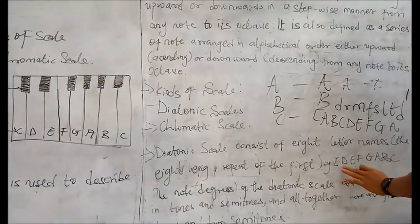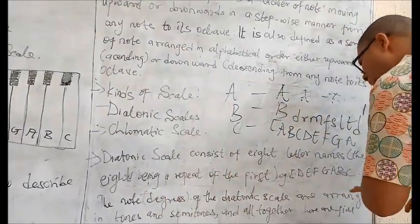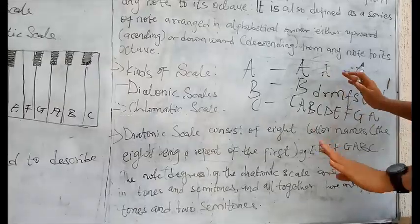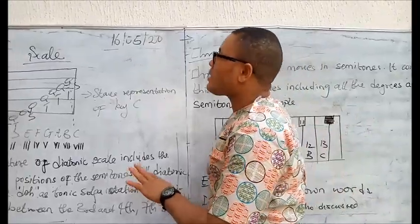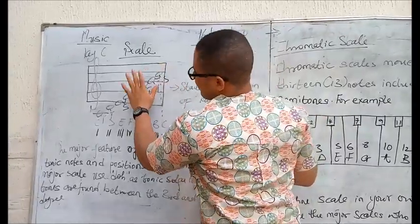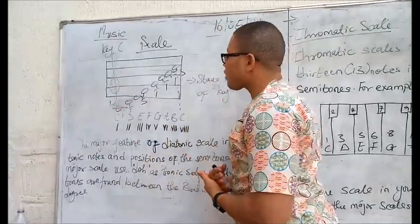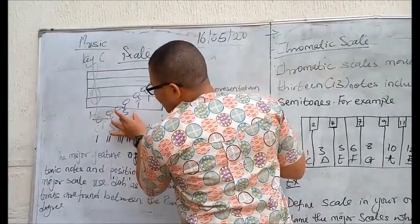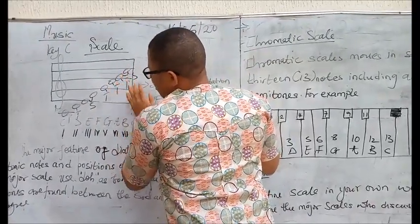You can see from C to C. The note degrees of the diatonic scale are arranged in tones and semitones, and altogether have five tones and two semitones. The diatonic scale comprises of five tones with two semitones. The semitones are found in between the third and the fourth notes and the seventh and the eighth notes.